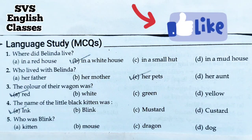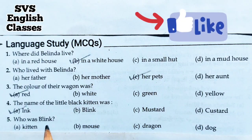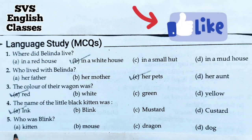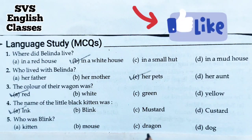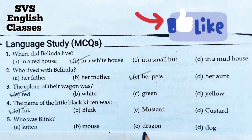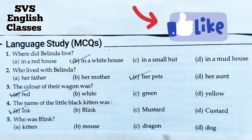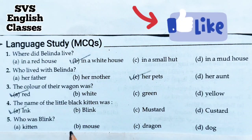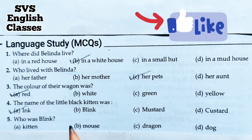Number five: Who was Blink? A. A kitten, B. A mouse, C. A dragon, D. A dog. Blink was the mouse, so option B is correct.